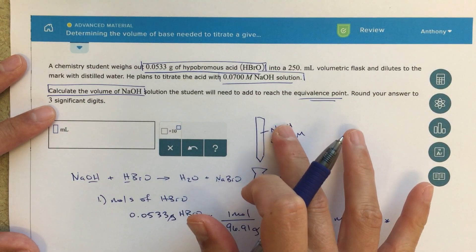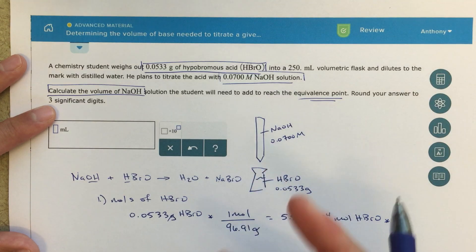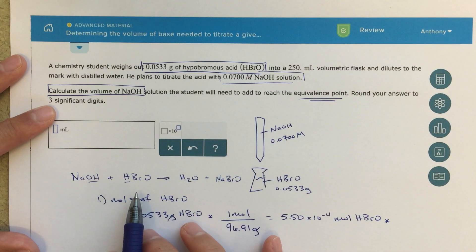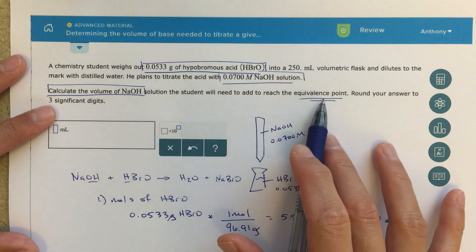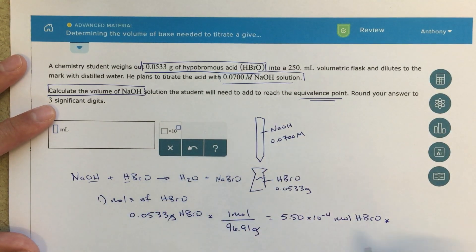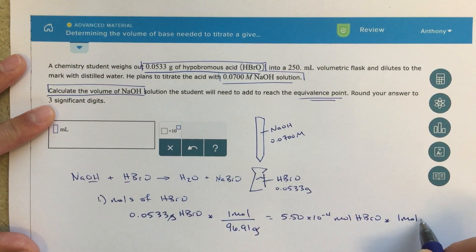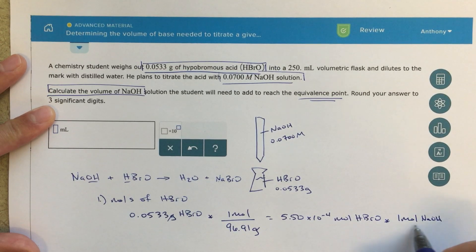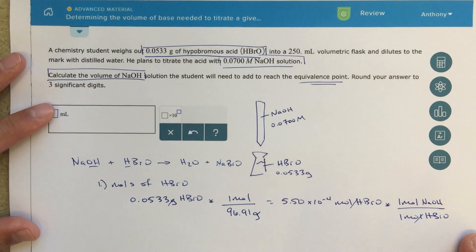So we can do that calculation where we say, well, if this is the number of moles of HBRO, how many moles of sodium hydroxide am I going to need to add in order to neutralize this acid, in order to get to the equivalence point for this reaction? So I would just write one mole of NaOH over one mole of HBRO. My units of moles of HBRO will cancel out, and I'll just be left with the same number of moles of sodium hydroxide at the equivalence point.